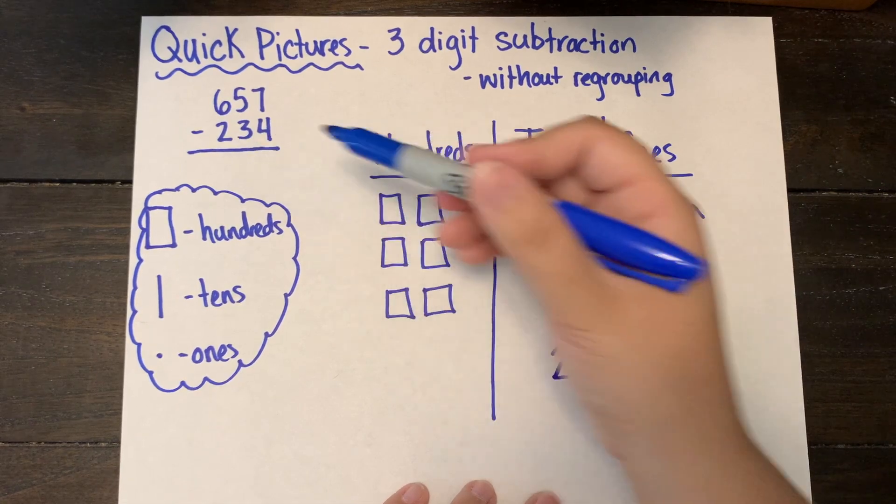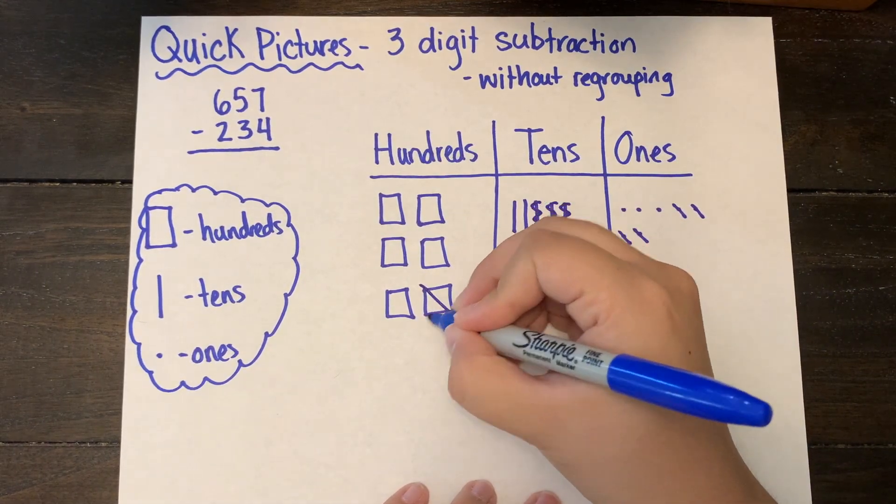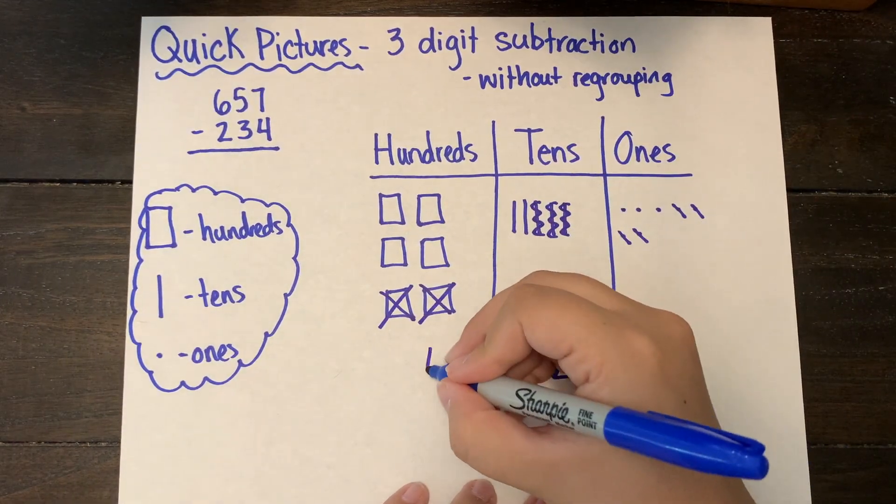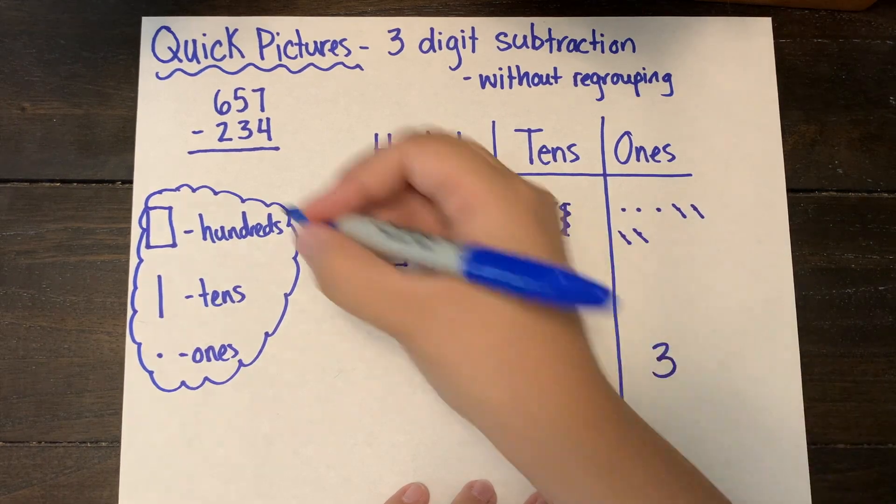Finally in my hundreds column, I have enough to take away two hundreds, and that leaves me with four hundreds. Four hundred twenty-three is my answer.